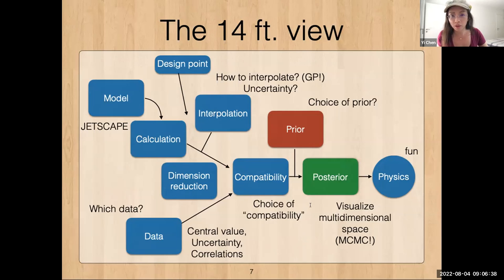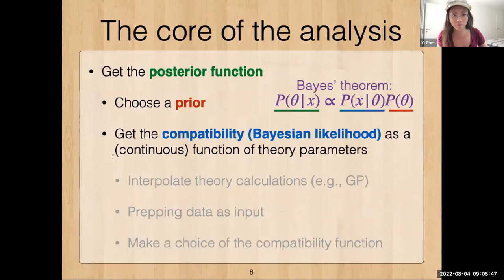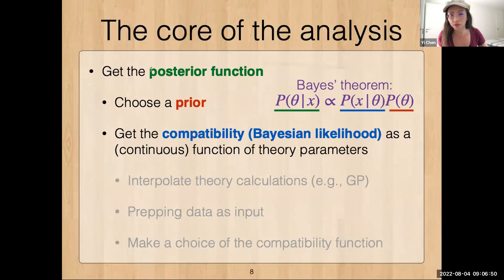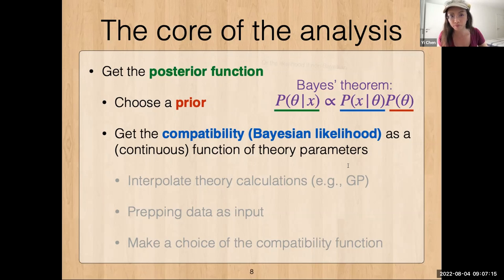The core of the analysis — shown in the colored boxes — is really to get the posterior function. As soon as we have this function written down and easy to calculate, we have all the information we need to analyze and extract what we want. In the Bayesian formalism this involves Bayes' theorem and writing down the Bayesian likelihood, and then there are some tricks to make it tractable.